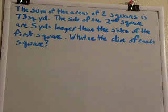So let me read this to you. The sum of the areas of two squares is 73 square yards. The side of the second square is five yards longer than the side of the first square. What are the dimensions of each square?